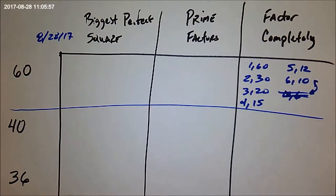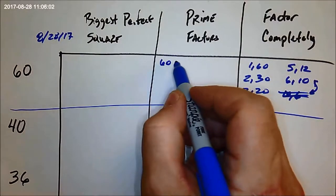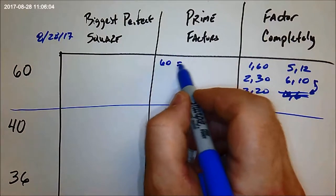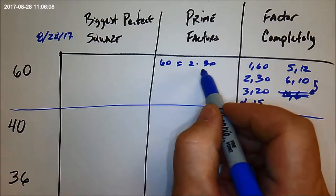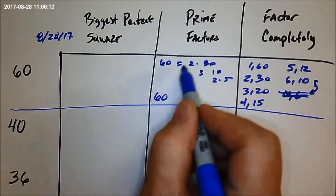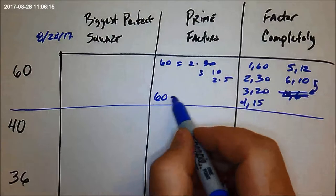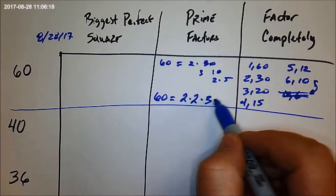Now prime factors, let's see here, 60, well, two goes in 30 times, right? And three goes into 30 ten times, and 10 is two times five. So the prime factors, this is the scratch work, it's not the prime factorization. It's two times two times three times five.